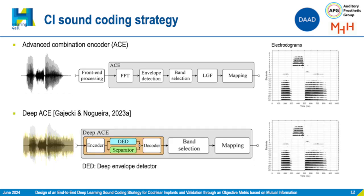Another sound-coding strategy that we will talk about in this talk was developed in this group, the APG, and it's called DeepACE. As you can see in the figure, it's similar to the Advanced Combination Encoder, but contains a DNN module that will perform end-to-end CI speech denoising, marked in orange.